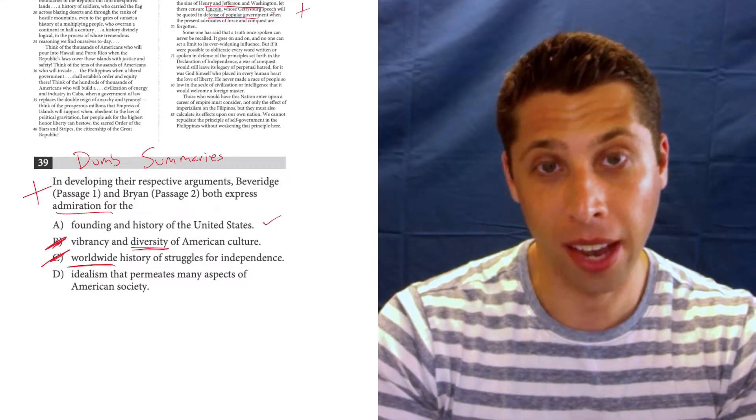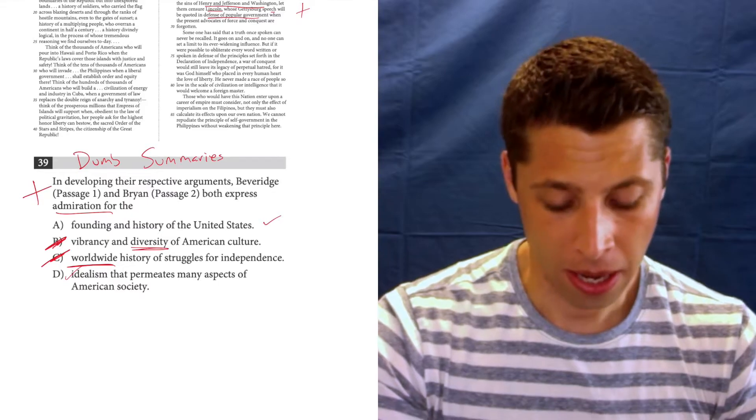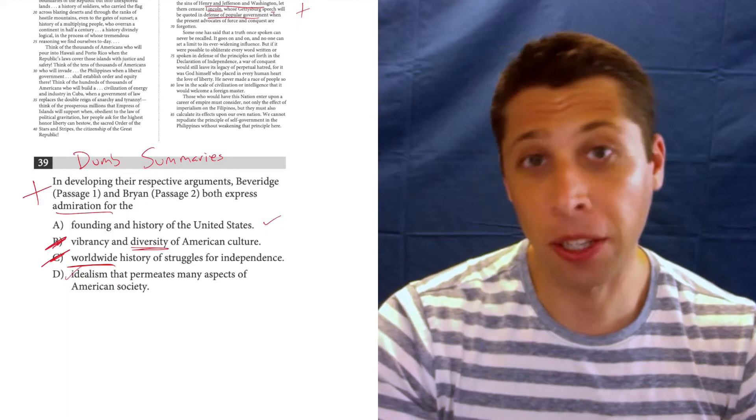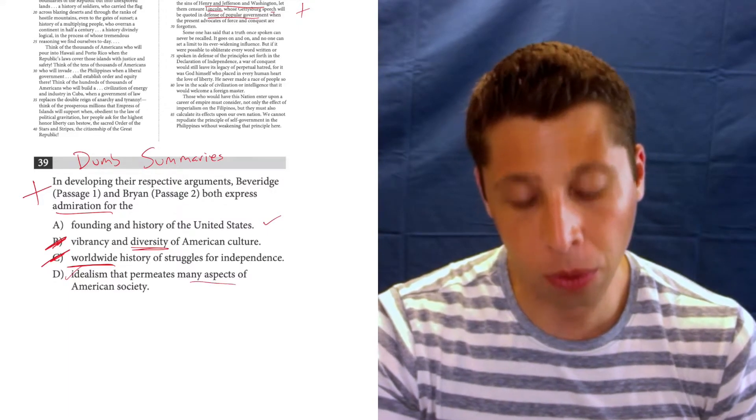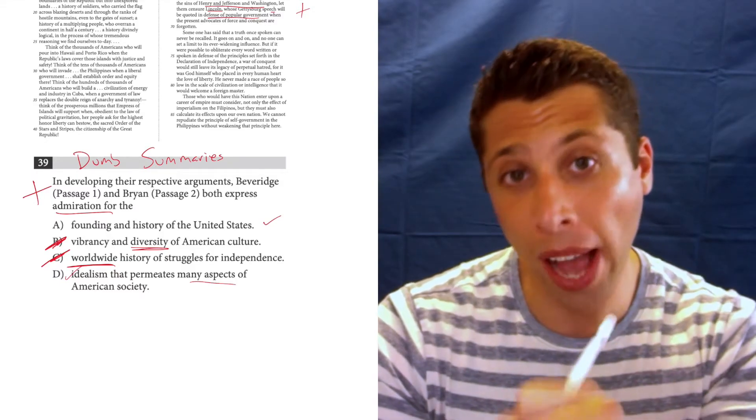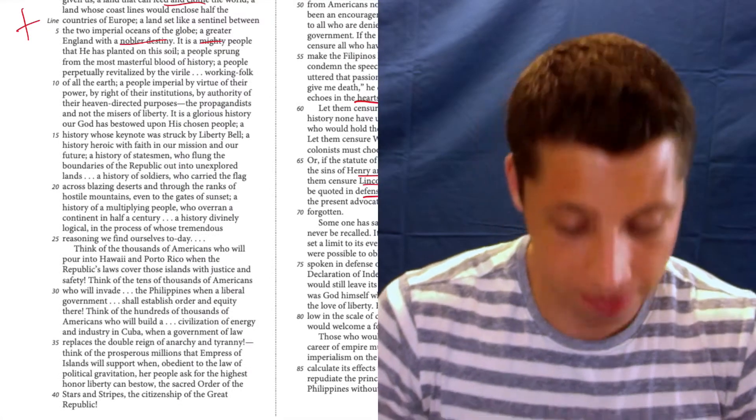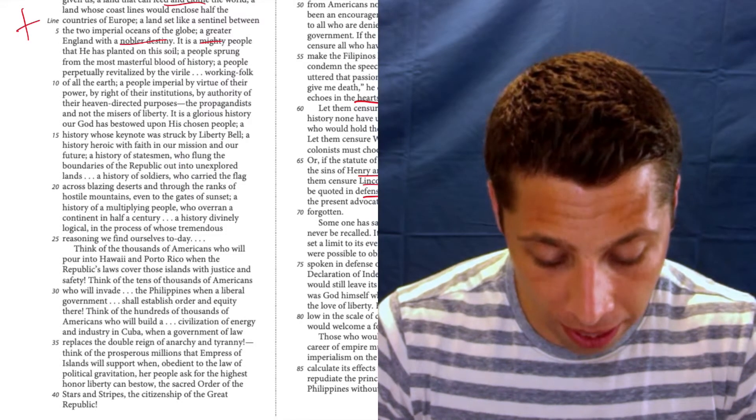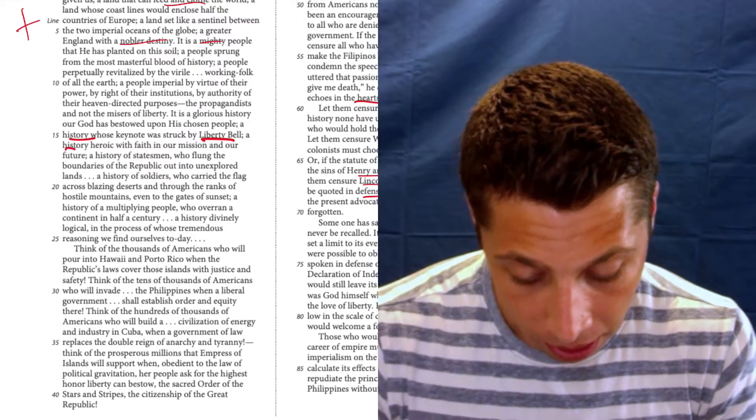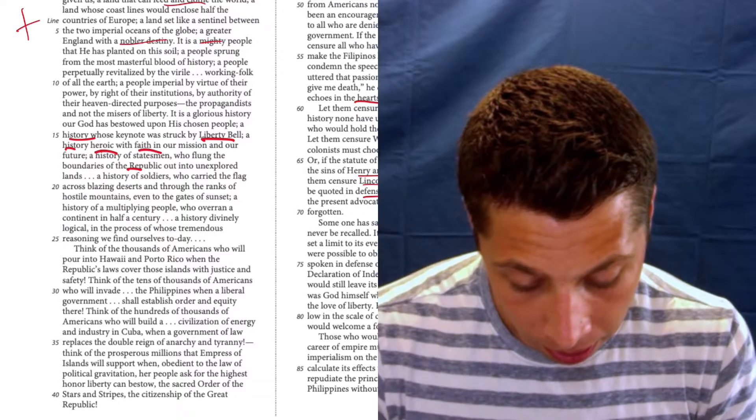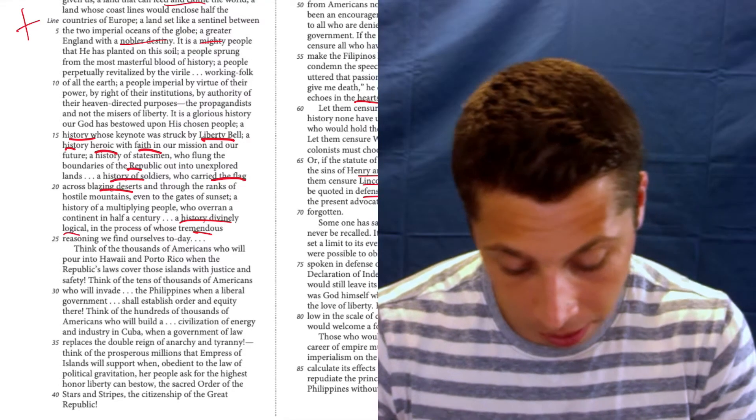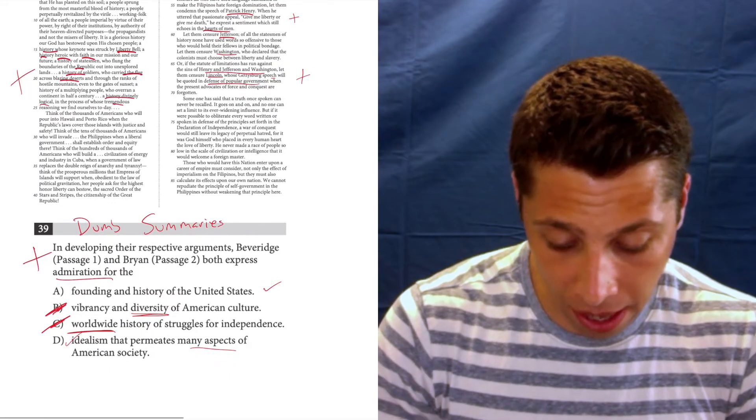The idealism that permeates many aspects of American society. Well, I like idealism. That seems to match. But he's very specific about what he's talking about. This is a good example where A is a much more focused version of D. Why are we idealistic? Because of our founding and our history. So, maybe this is kind of true. But I like A better. It seems to match. And so, now my task is clear. I need to go back to passage one and see if he also says things about America's history and founding. So, I'm looking now with purpose at these long lines. And I'm not reading them all for understanding. I'm reading them all to see, do they talk about this one specific thing? The history and founding of the United States. And there was a little of that in the beginning. But then here, Liberty Bell, His Chosen People, History, Heroic, Faith in Our Mission, Republic, History of Soldiers, Carried the Flag, Blazing Deserts. History Divinely Logical, Tremendous. Okay, great, positive. That's all I needed. That enough, that is enough for me to confidently pick A.